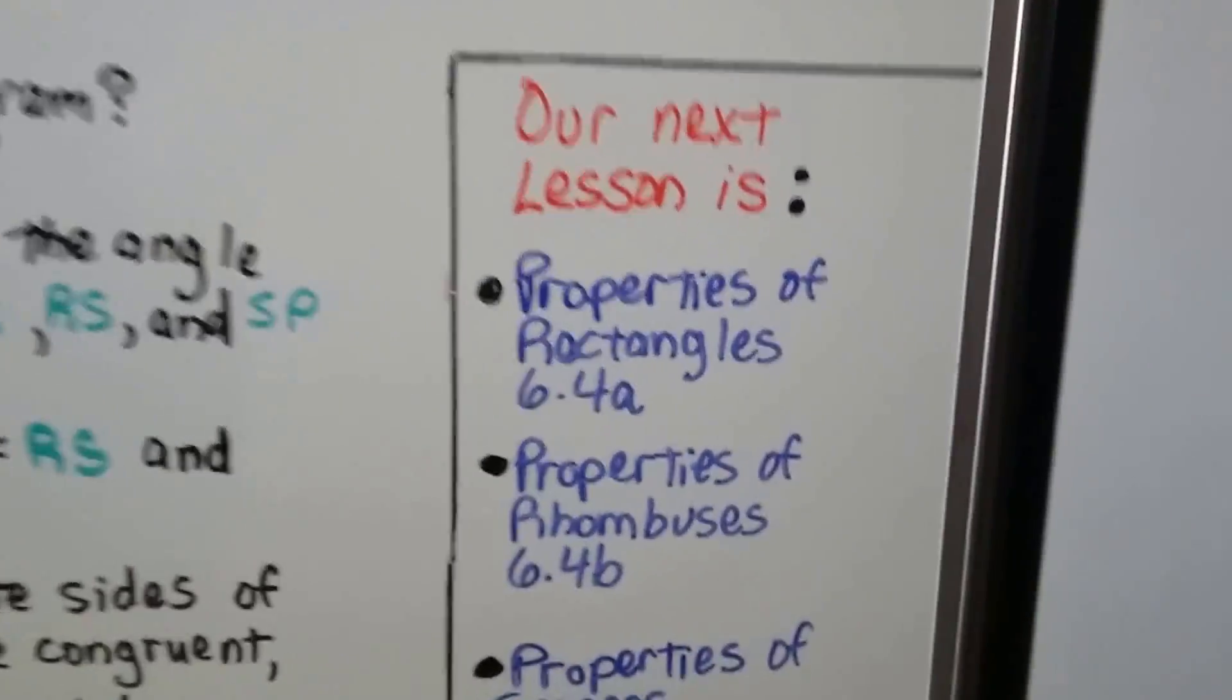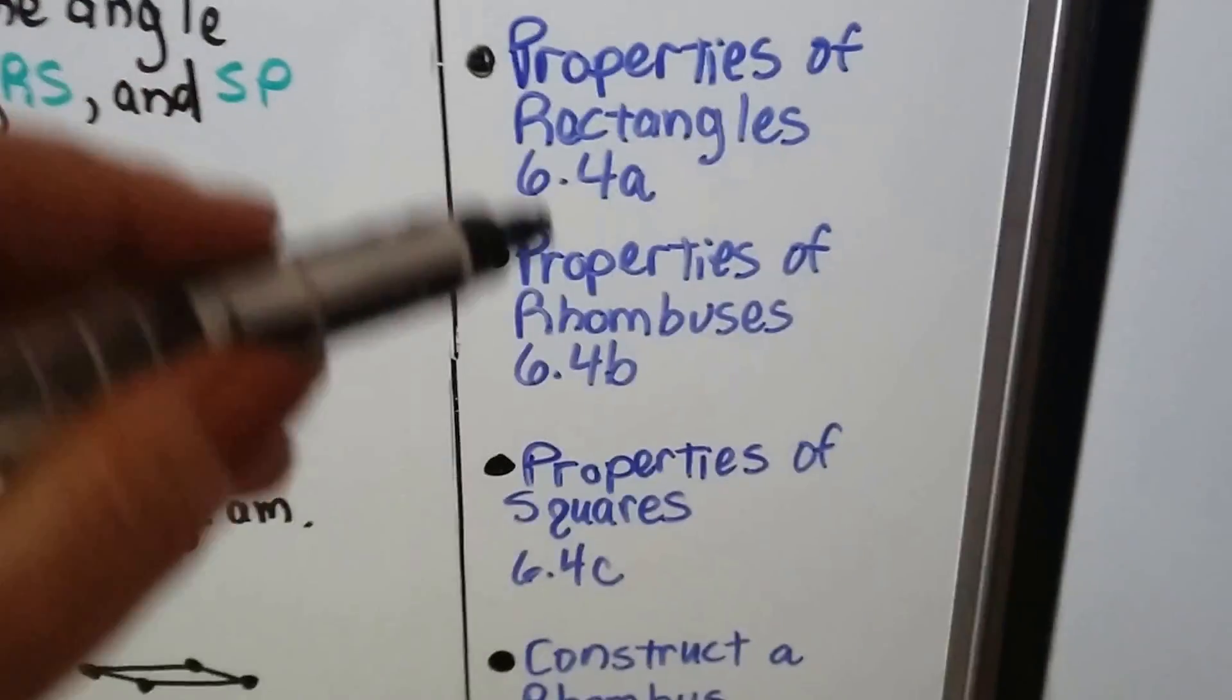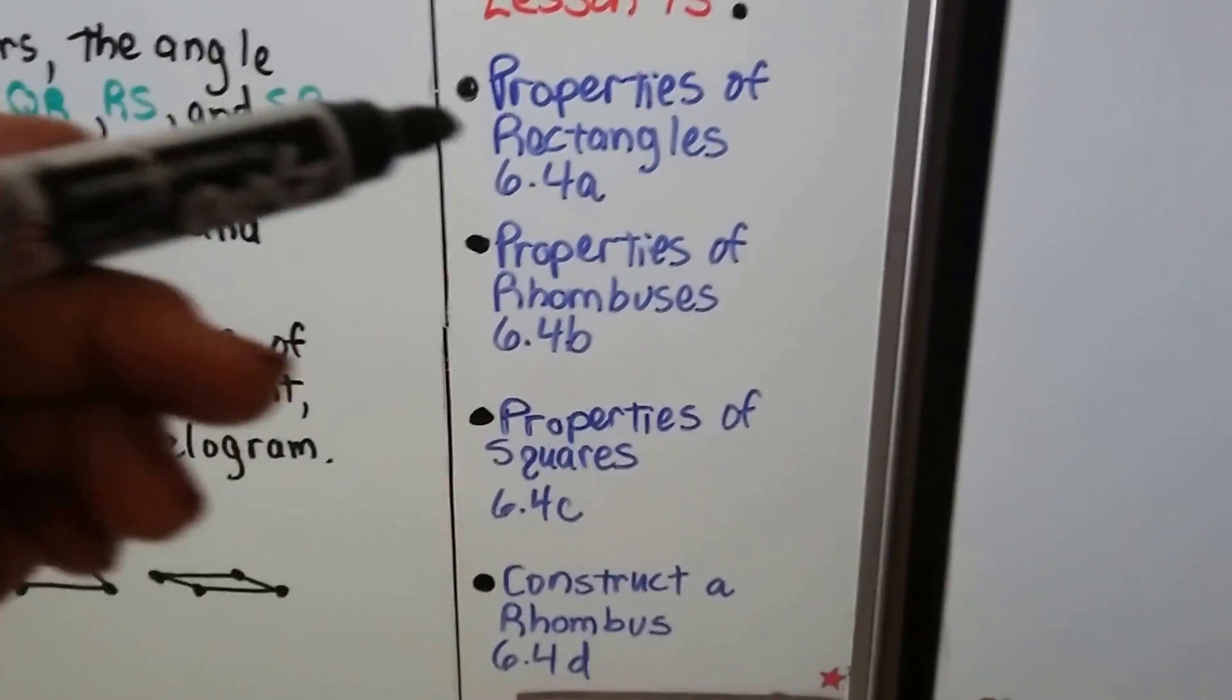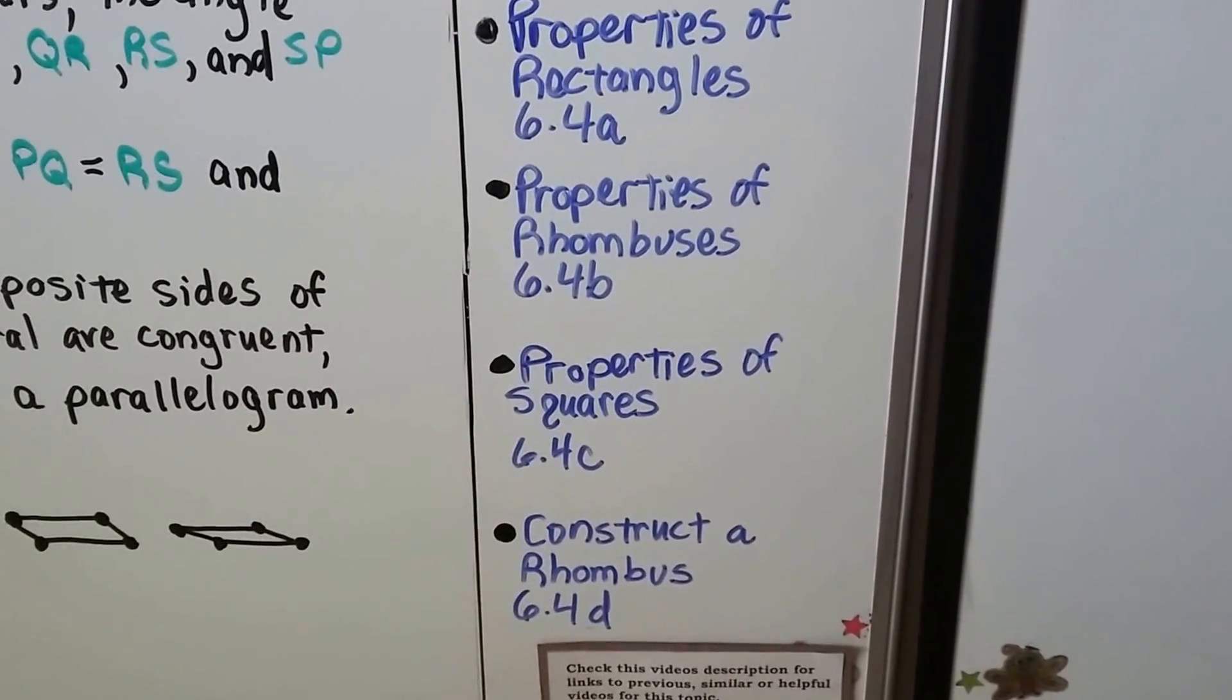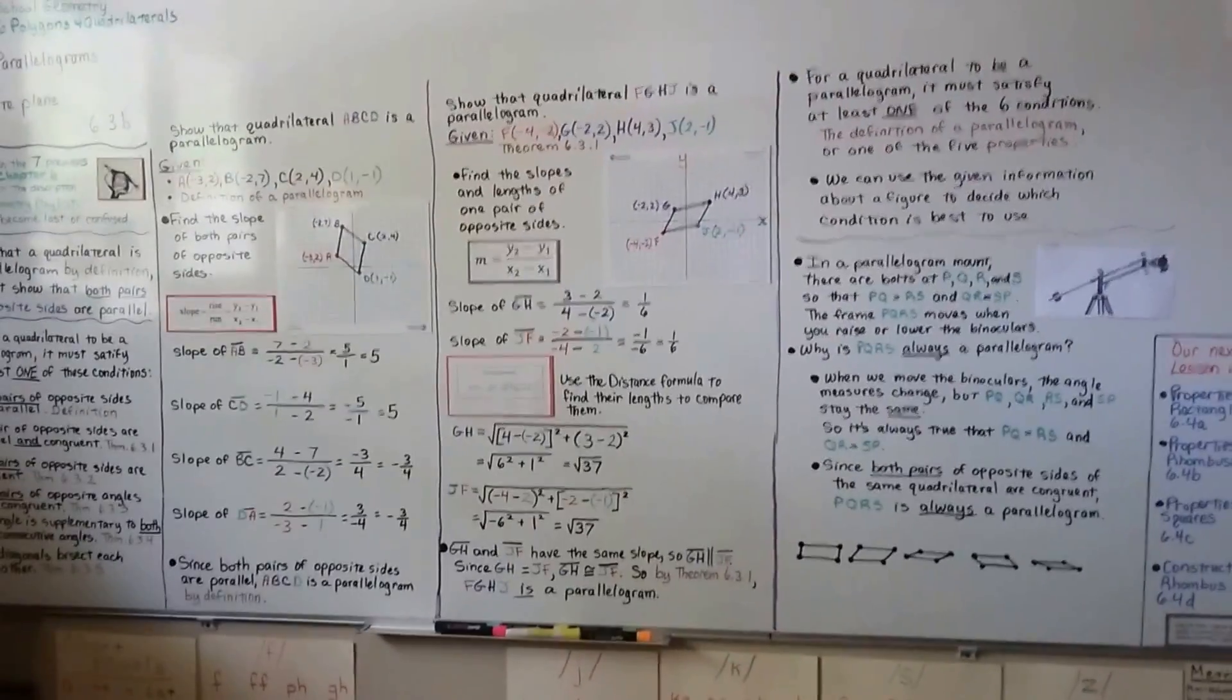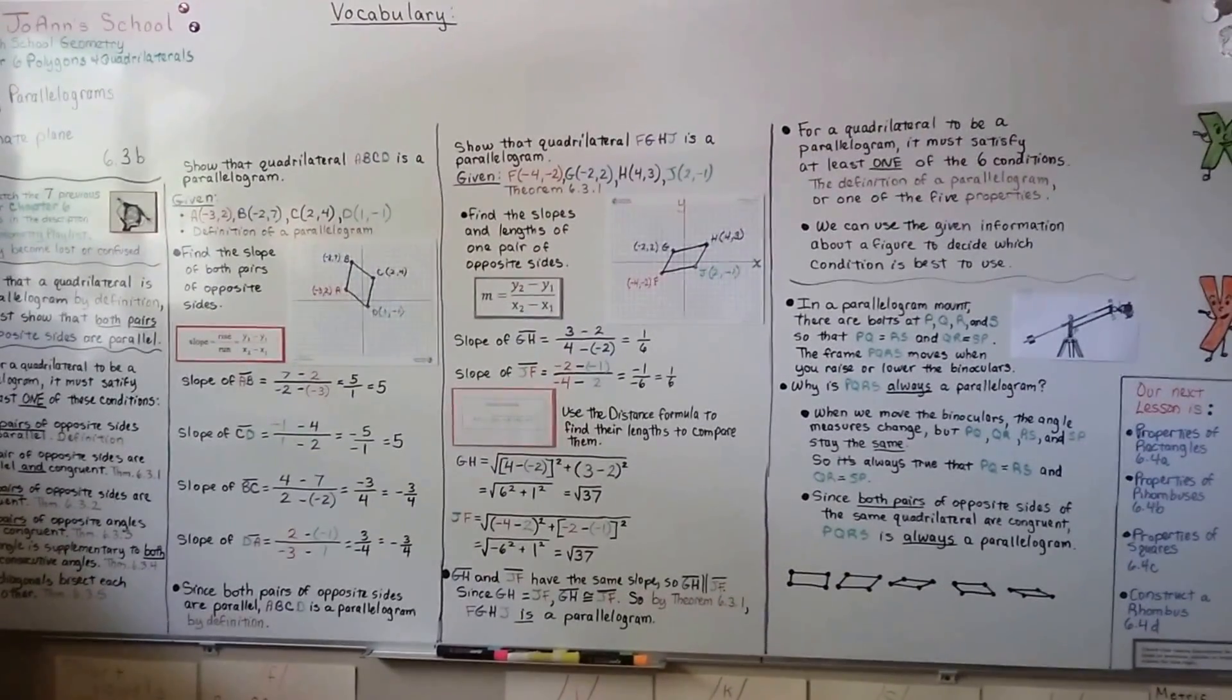Our next lesson is properties of rectangles 6.4a, and all four of these videos are part of lesson 6.4a. So after rectangles, we're going to talk about rhombuses and then squares, and then we're actually going to get our compass and construct a rhombus. So that's it for 6.3b. I hope you understood, and hit that like button for me. Bye.